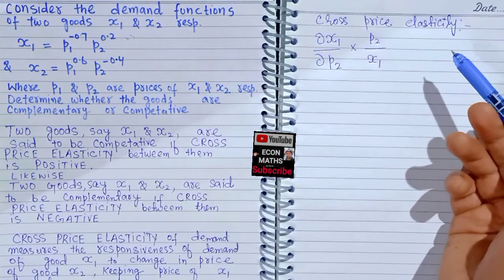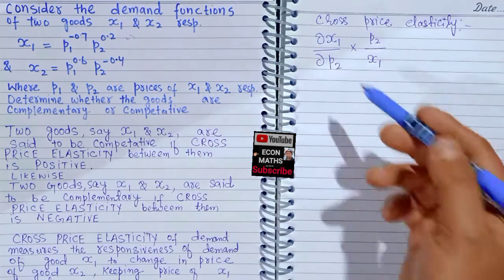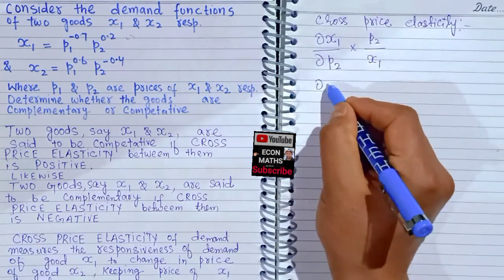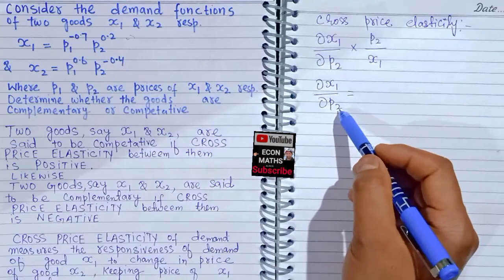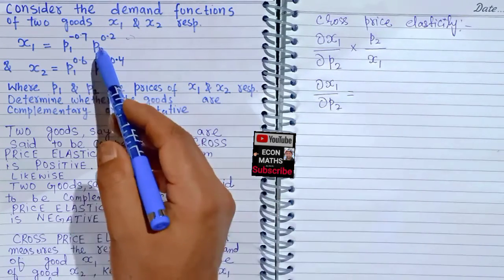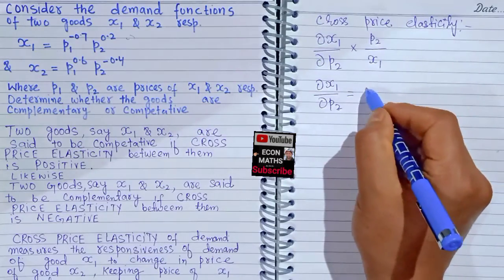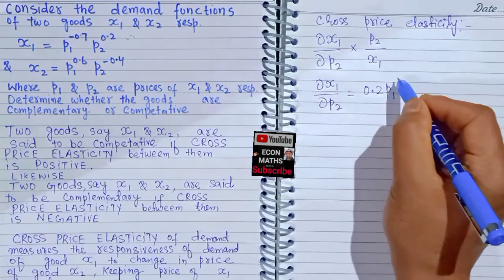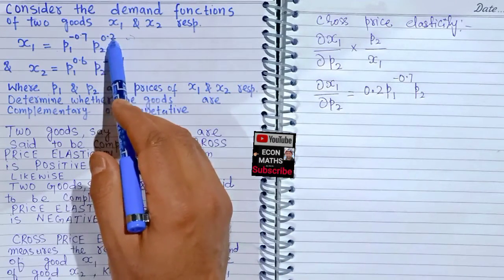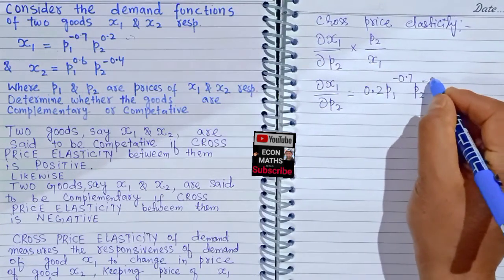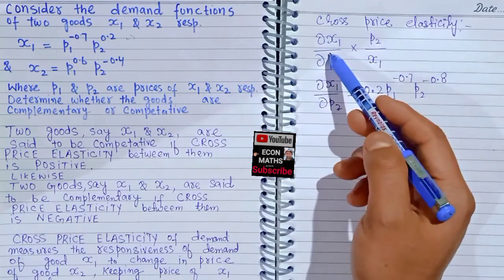Let's first calculate del x1 upon del P2 — that means we differentiate the demand function of x1 with respect to the price of good x2. By the power function rule, the exponent becomes the coefficient, so we get 0.2 times P1 raised to the power minus 0.7 times P2 raised to the power 0.2 minus 1, which equals minus 0.8.